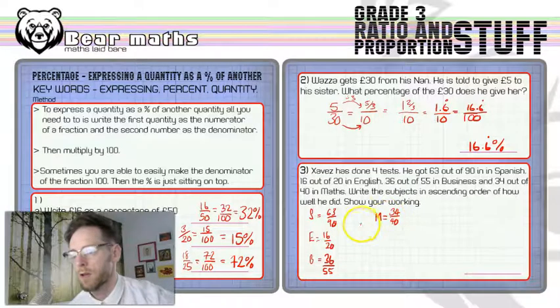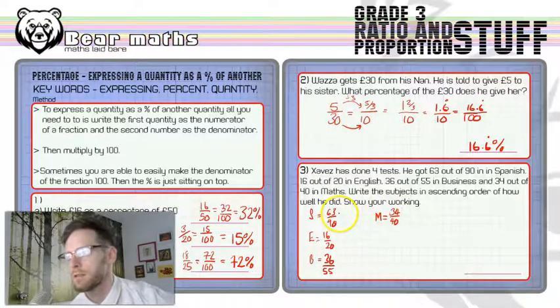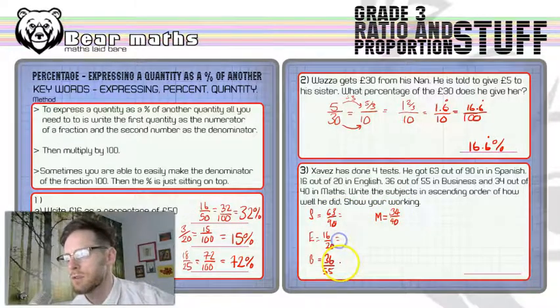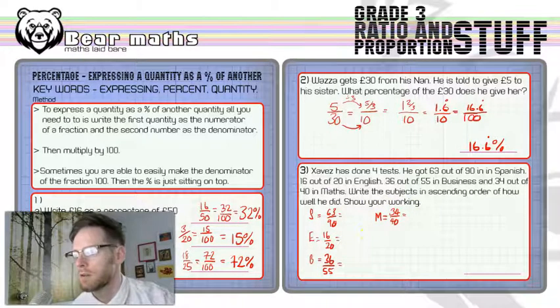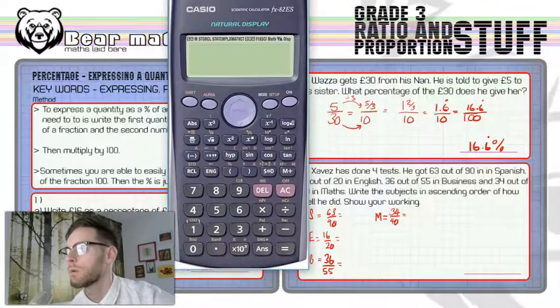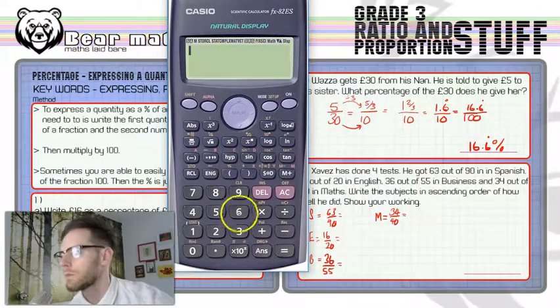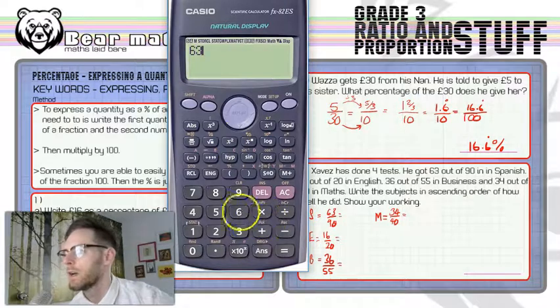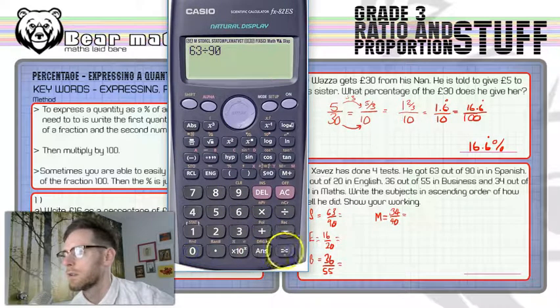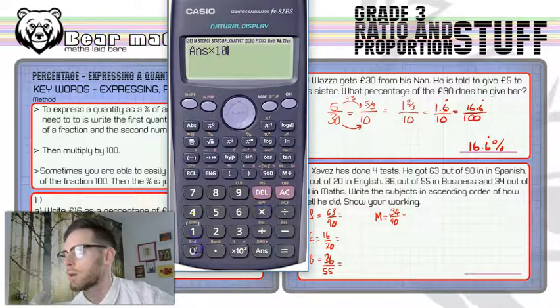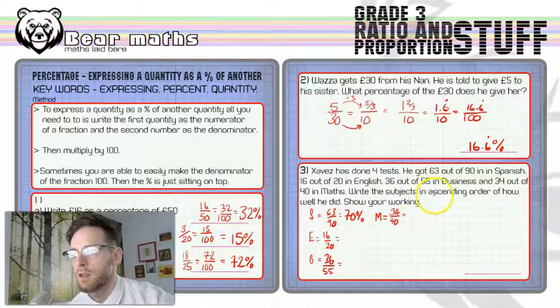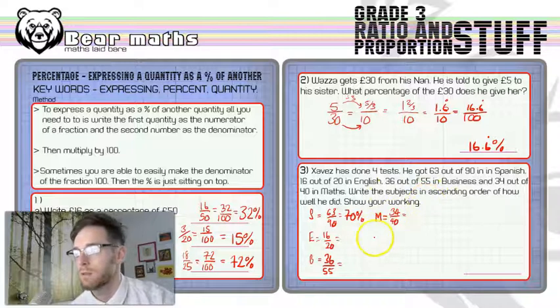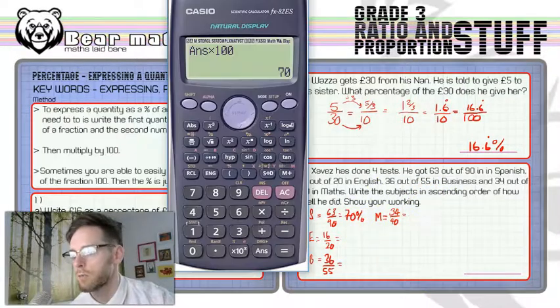Now, there is a way we could do this just with the fractions, but it's probably easier to turn them into percentages. Whenever you turn something into a percentage, top divided by bottom times 100. So we're going to do that, and we're going to work out the percentage for each one of these. We've got to work out what subjects, write the subjects in ascending order of how well he did, and then we've got to show our work. So this is our working that we're showing here.